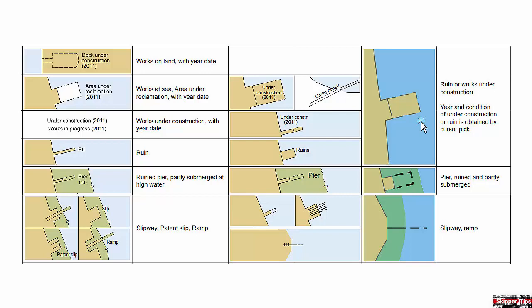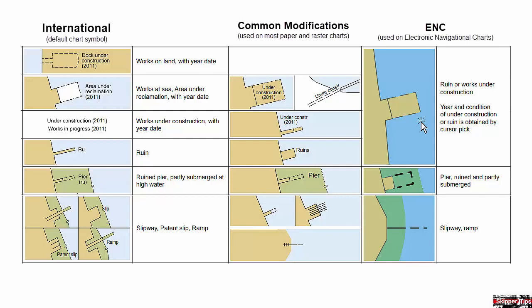When you look in chart number 1, you'll see three columns of chart symbols. The first column shows the international symbol. The second column shows slight modifications to the international symbol, most commonly found on paper and raster nautical charts.